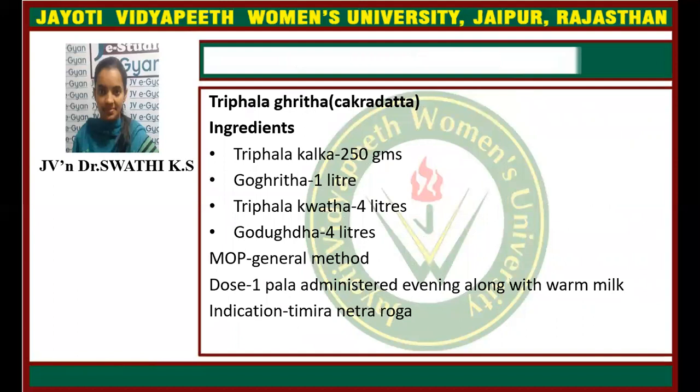Next is Triphala Ghrita, referenced from Chakra Dutta. Ingredients: Triphala Kalka 250 grams, Go-Ghrita 1 liter, Triphala Kvatha 4 liters, and Go-Dugdha 4 liters. The method of preparation follows the general method of Sneha Kalpana. One Pala is administered in the morning along with warm milk. Indicated in Timira Netra Roga (eye disorders).